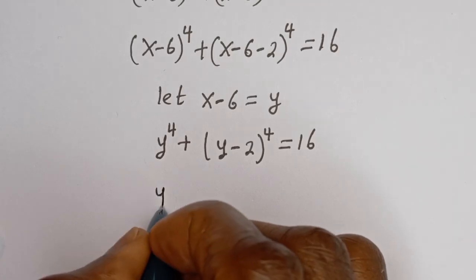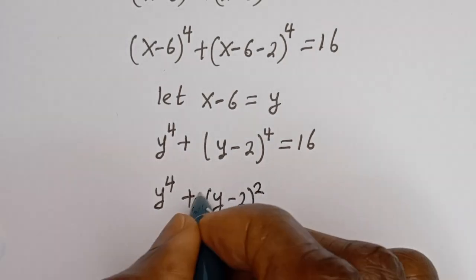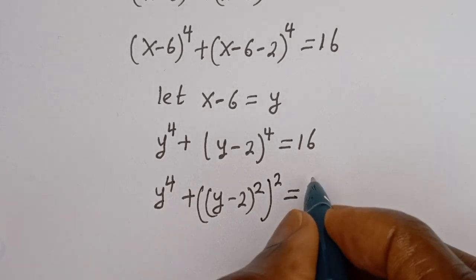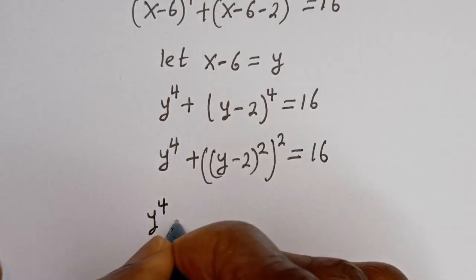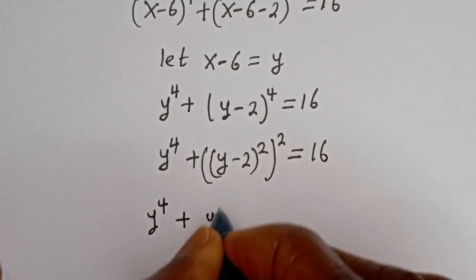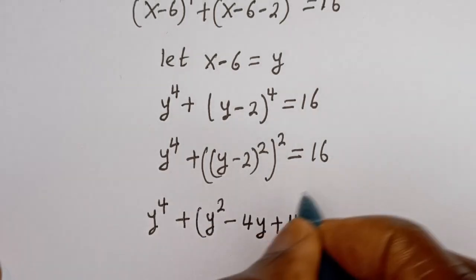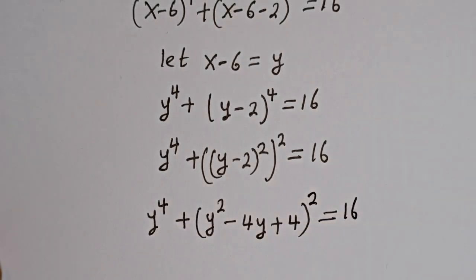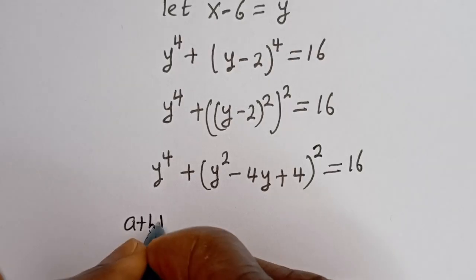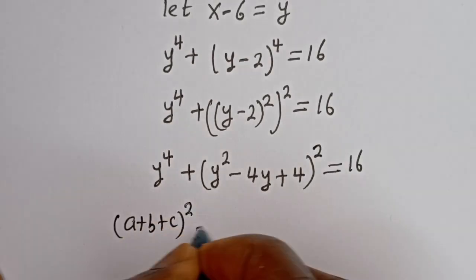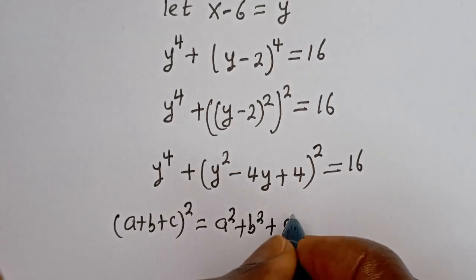This can be written as y⁴ plus, if you expand (y-2)⁴, we have (y² - 4y + 4) squared is equal to 16. Now here, if you have (a + b + c) squared, this is equal to a² plus b² plus c².